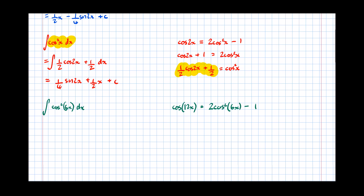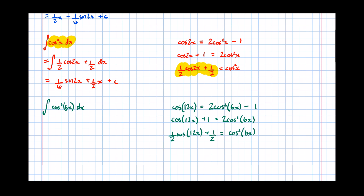Our angle here is 12x. Just as cos(2x) is 2 cos squared of half that angle (half of 2x is x) minus 1, cos(12x) is 2 cos squared of 6x minus 1. Rearranging so it says cos squared of 6x: add 1 to get cos(12x) plus 1 equals 2 cos squared of 6x. Then halve it: one half cos(12x) plus one half equals cos squared of 6x.